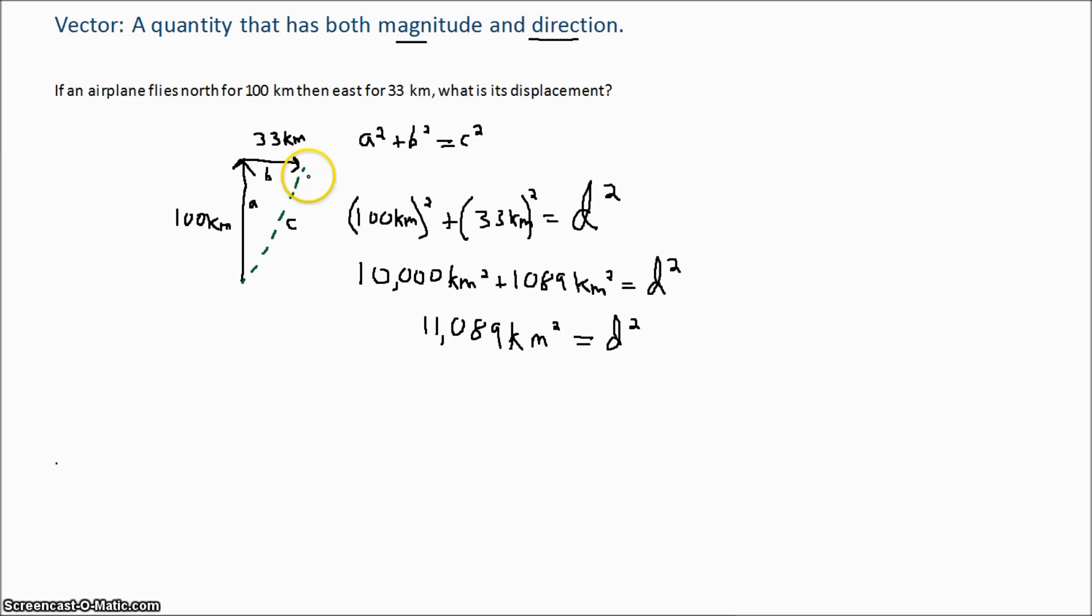We take the square root of both sides, because we don't want our displacement squared, we just want displacement. And we come up with 105.3 kilometers is our displacement.